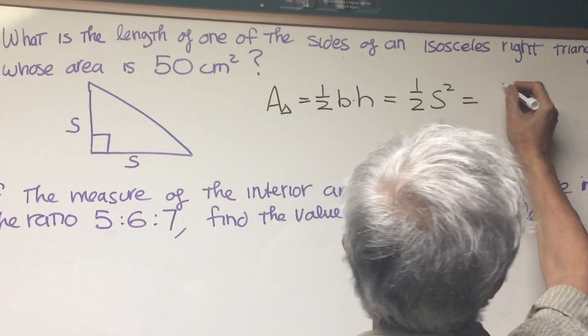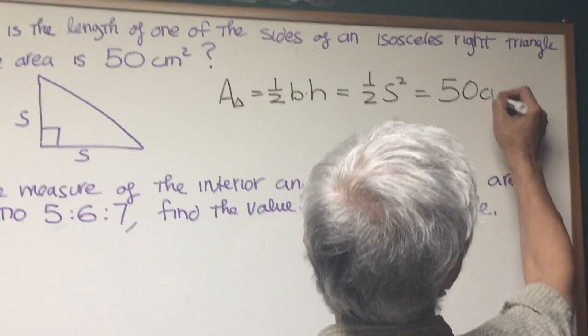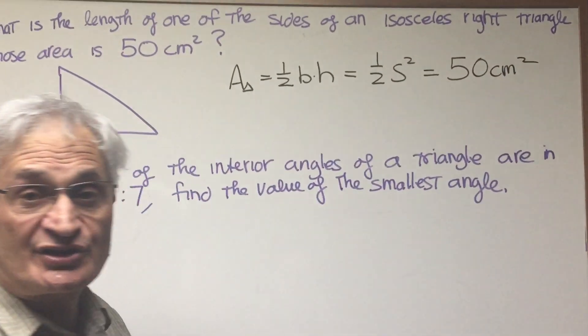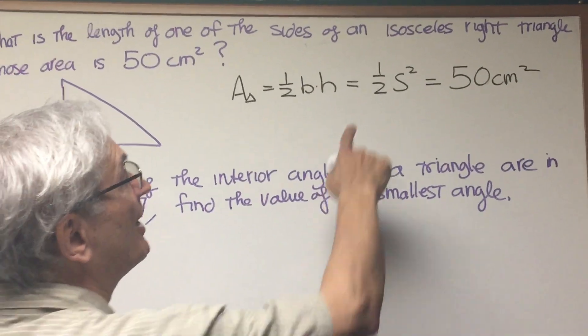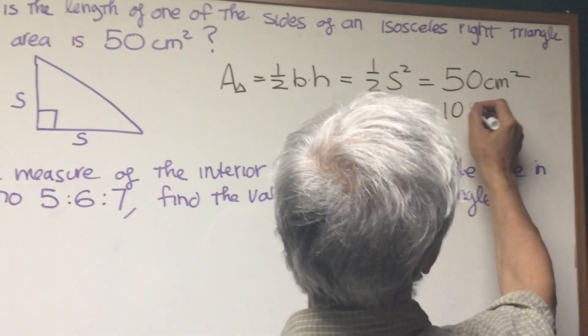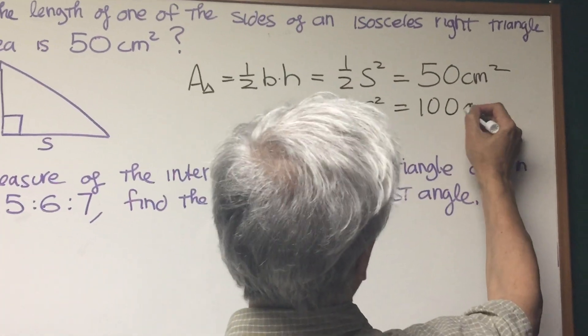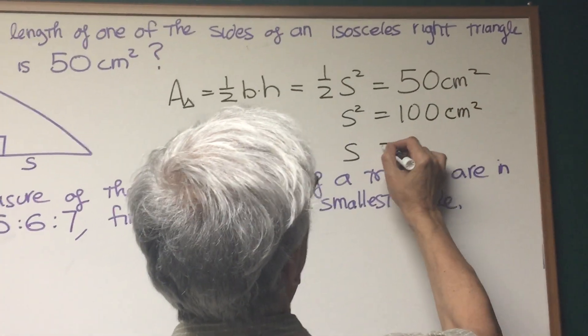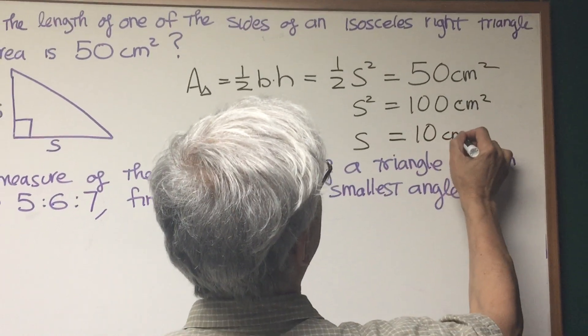Now what do we know? We're given that the area is 50 centimeters squared. All right, so now it's just a matter of algebraic solution. Multiply both sides of this equation by two: s squared is equal to a hundred centimeters squared, and therefore s is equal to ten centimeters.